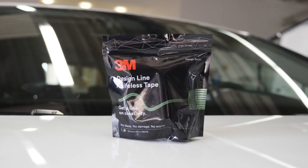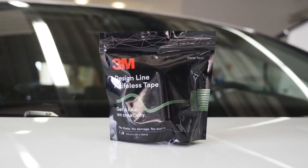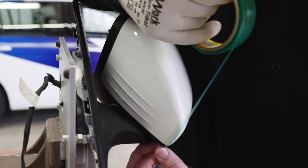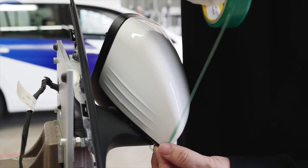After cleaning the mirror, use 3M Knifeless Tape Design Line to set the cut line for the first piece of film that is applied on the vertical undercut part of the mirror.